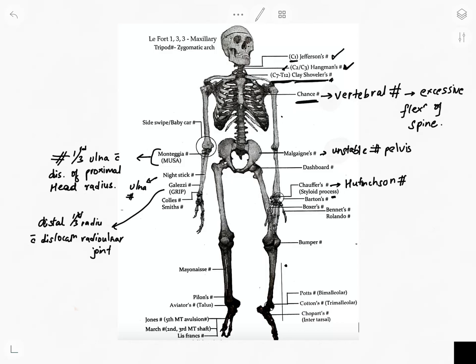Today we will be studying the named fractures, the important fractures in orthopedics, with their locations shown with the help of a diagram. C1 fracture is Jefferson's fracture. C2 to C3 fracture is also called Hangman's fracture. C7 to T12 is Clay Shoveler's fracture.